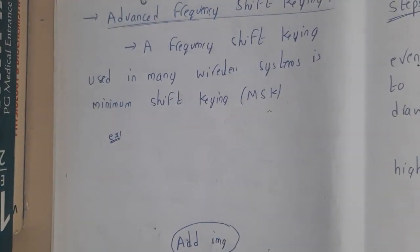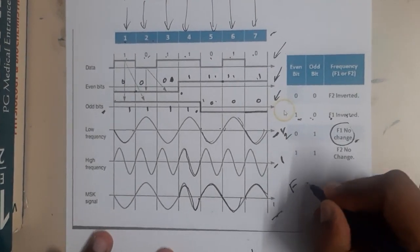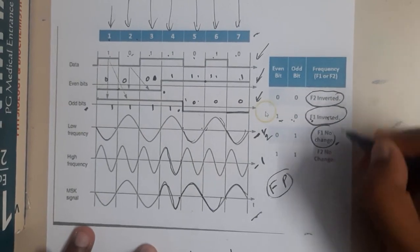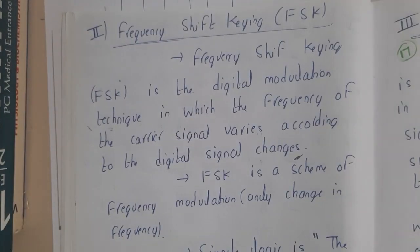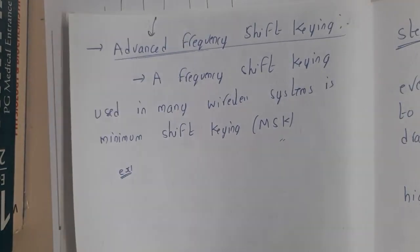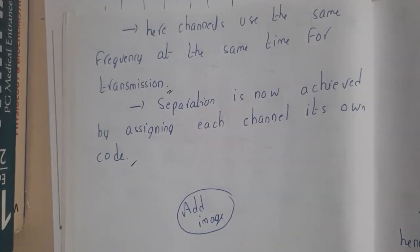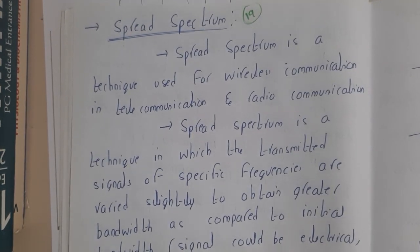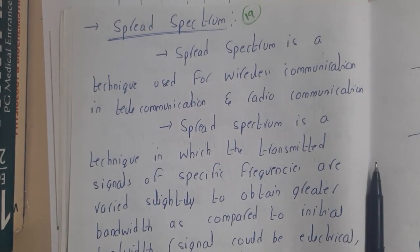In this way Advanced Frequency Shift Keying works. Notice that here both frequency and phase are altered — the inversion is the phase concept. So we covered basic ideas about both Phase Shift Keying and Advanced Frequency Shift Keying. We discussed all the concepts of modulation according to our syllabus: the three basic types and one advanced method. In the next lecture we'll be discussing spread spectrum. Thank you for watching.